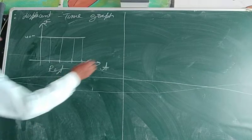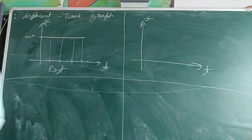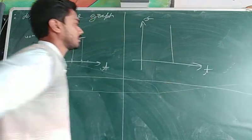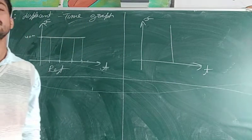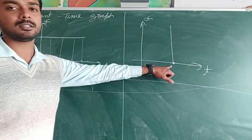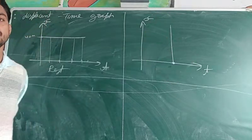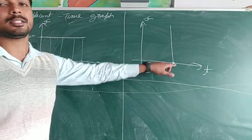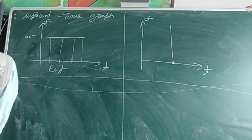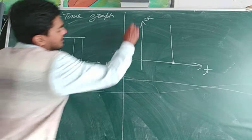Now, what about this graph? Here the x-axis is time and the y-axis is displacement, but in this graph the time is constant while displacement keeps changing. Such graphs are impossible because time cannot be at rest — we all know that time never stops. So this graph is not possible.